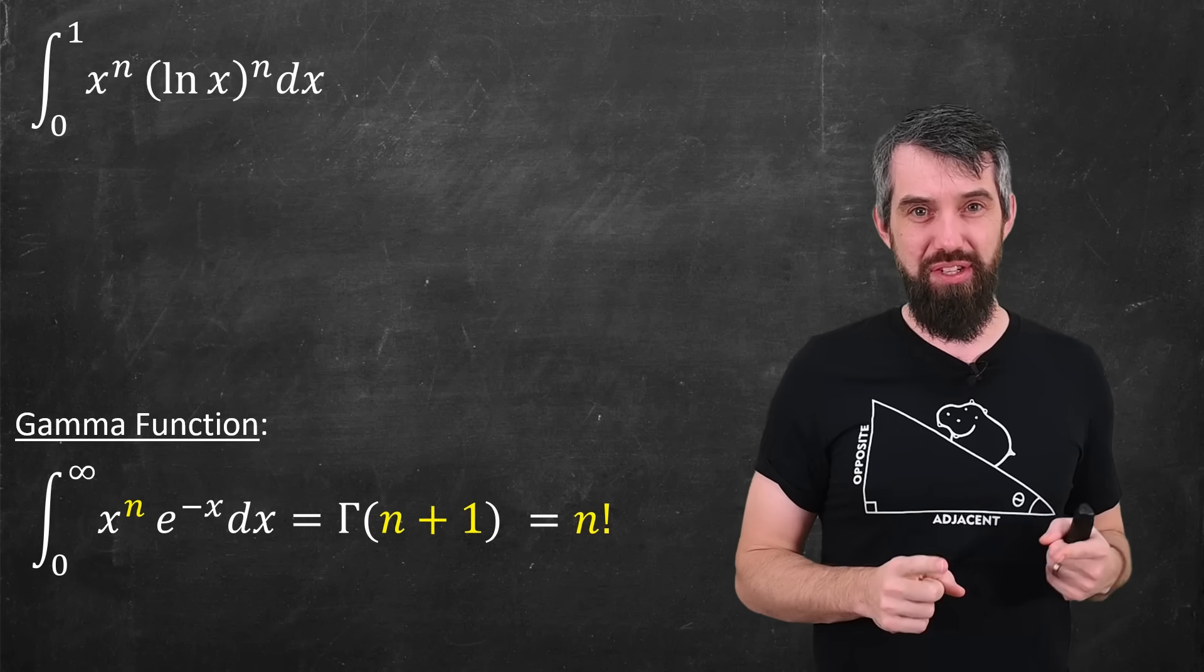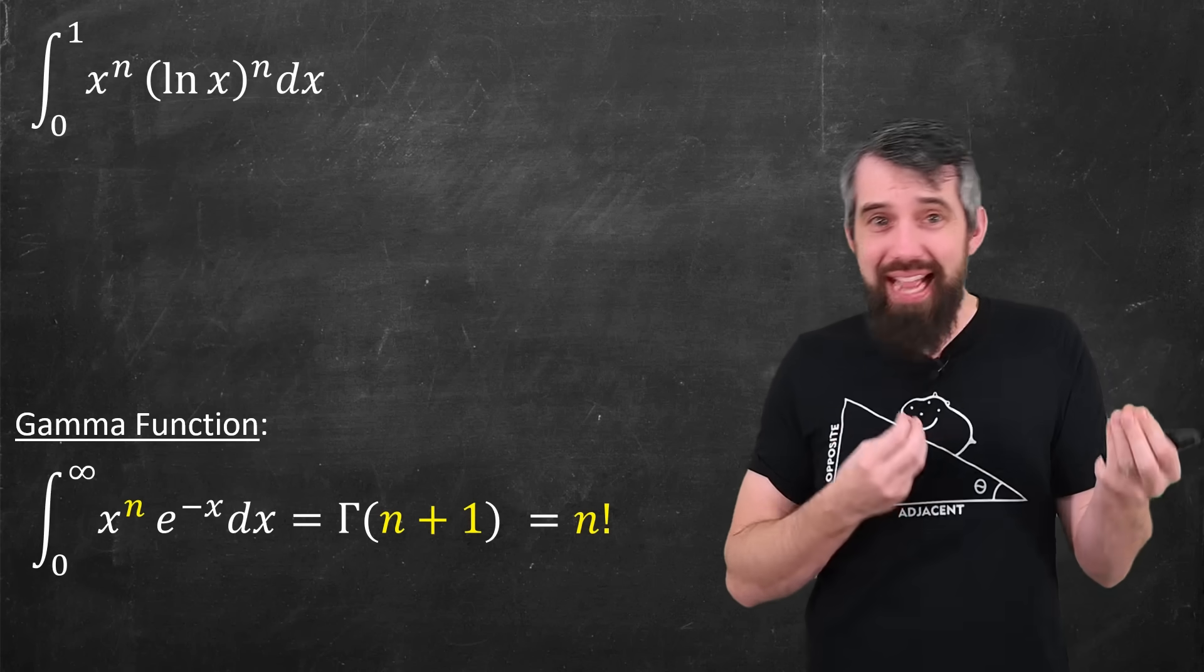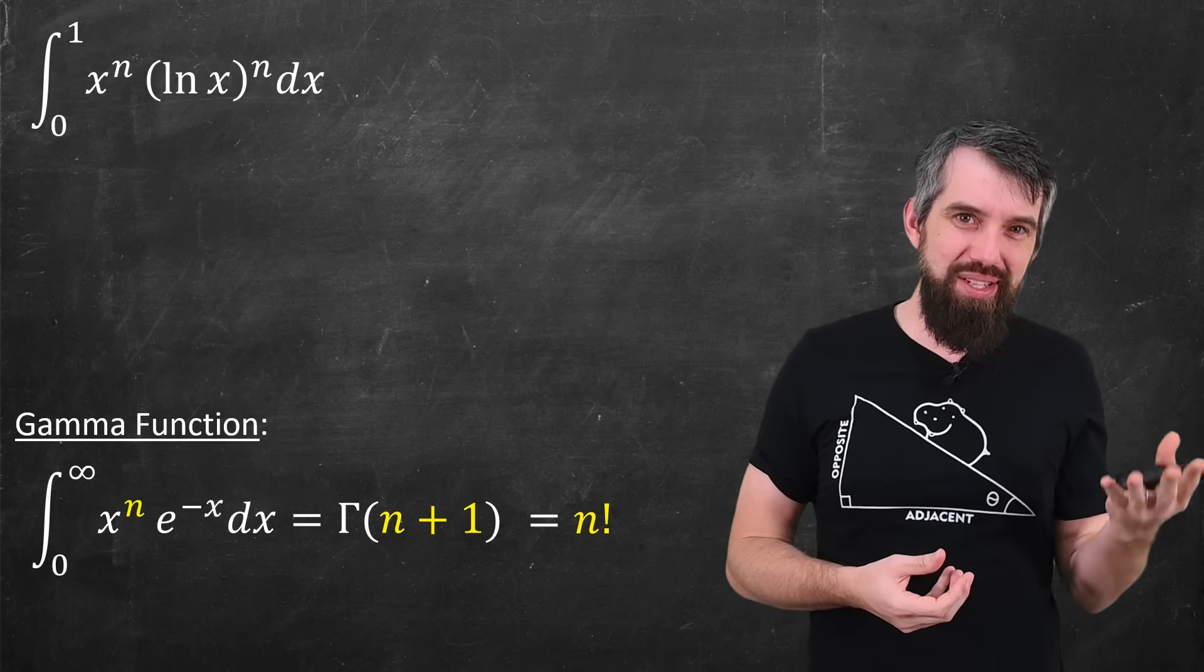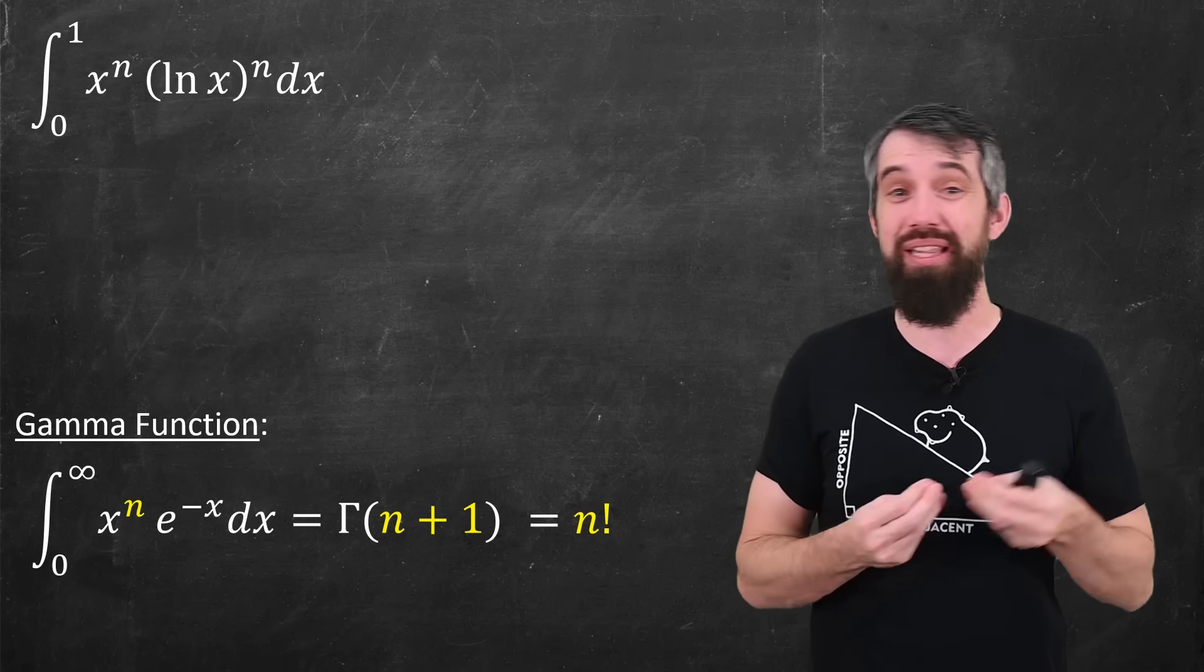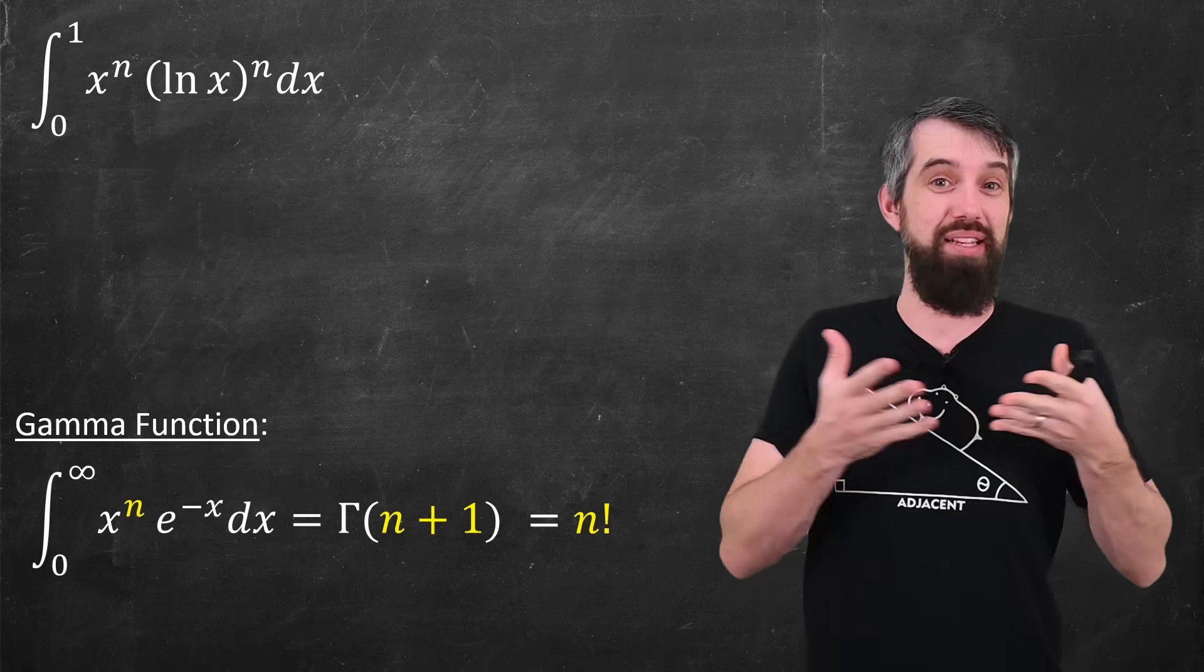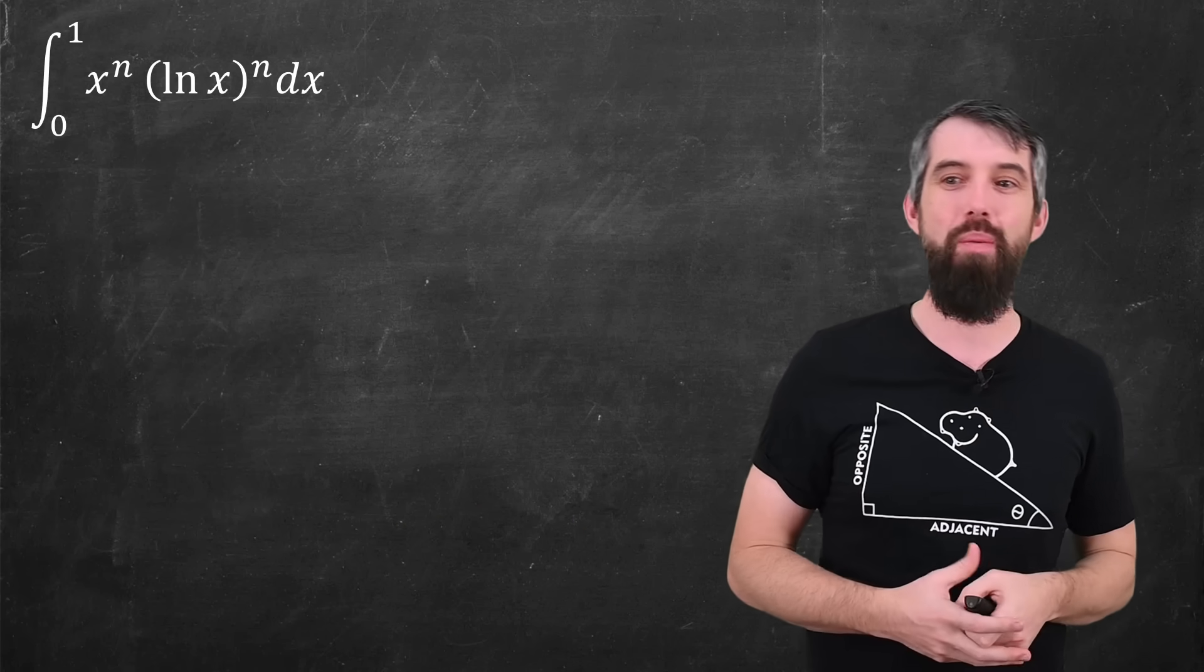And now when I look at the two of these, I notice that they're really similar. They've both got an x to the n in them, and then one's got exponentials, one's got logarithms, but I sort of imagine that I could do some sort of u substitution, clean them up, transform the one into the other.